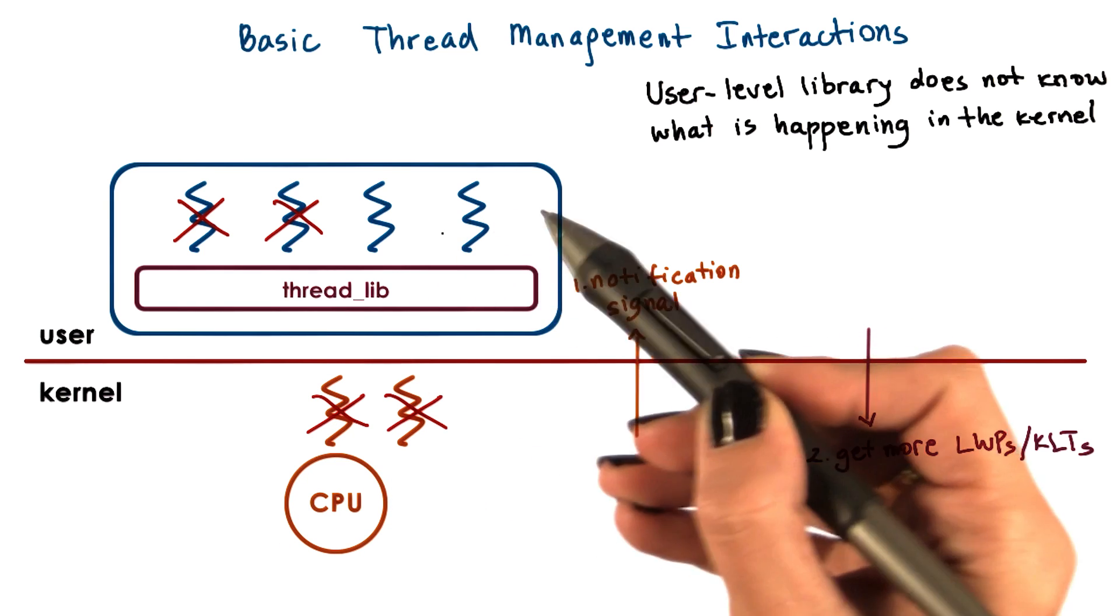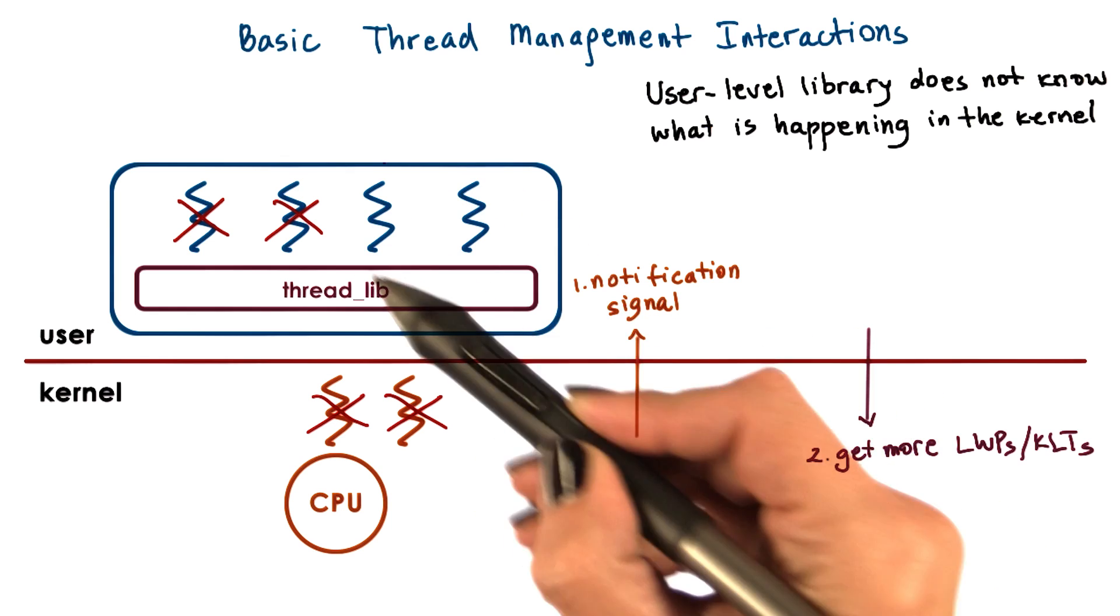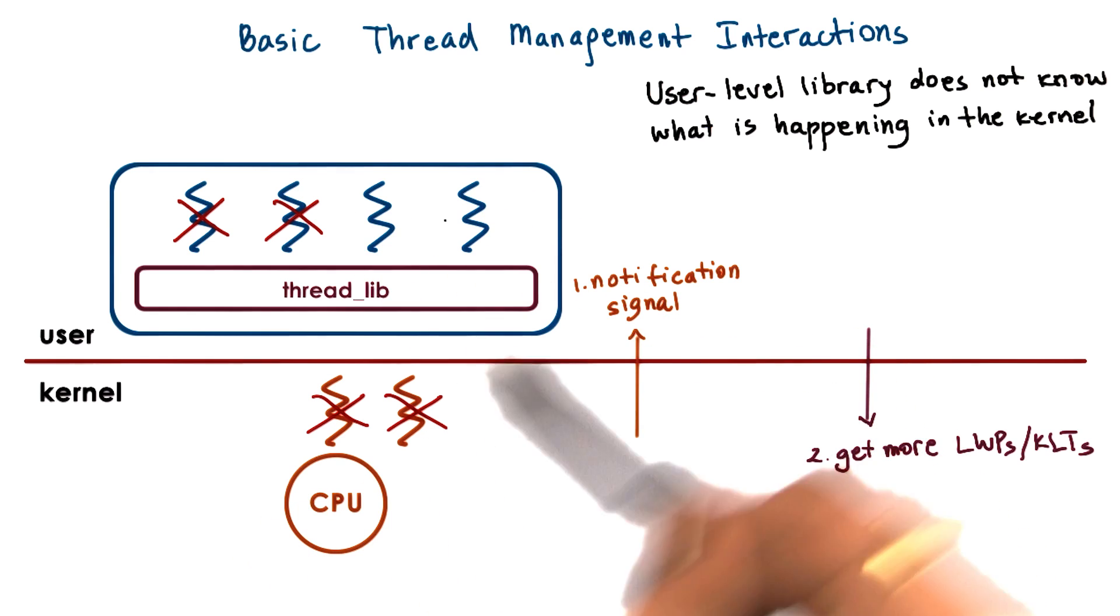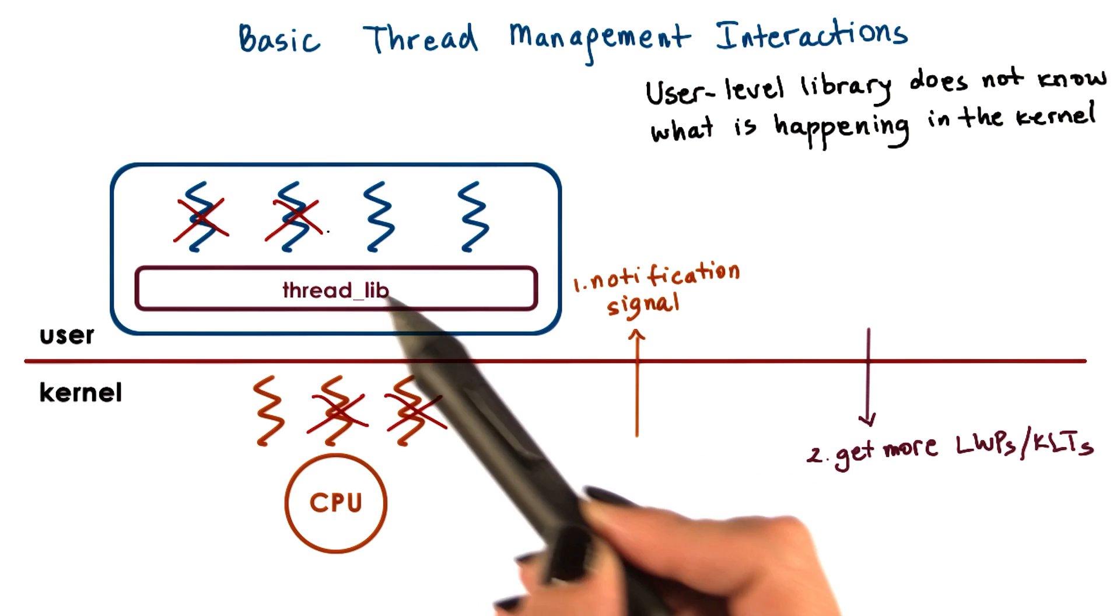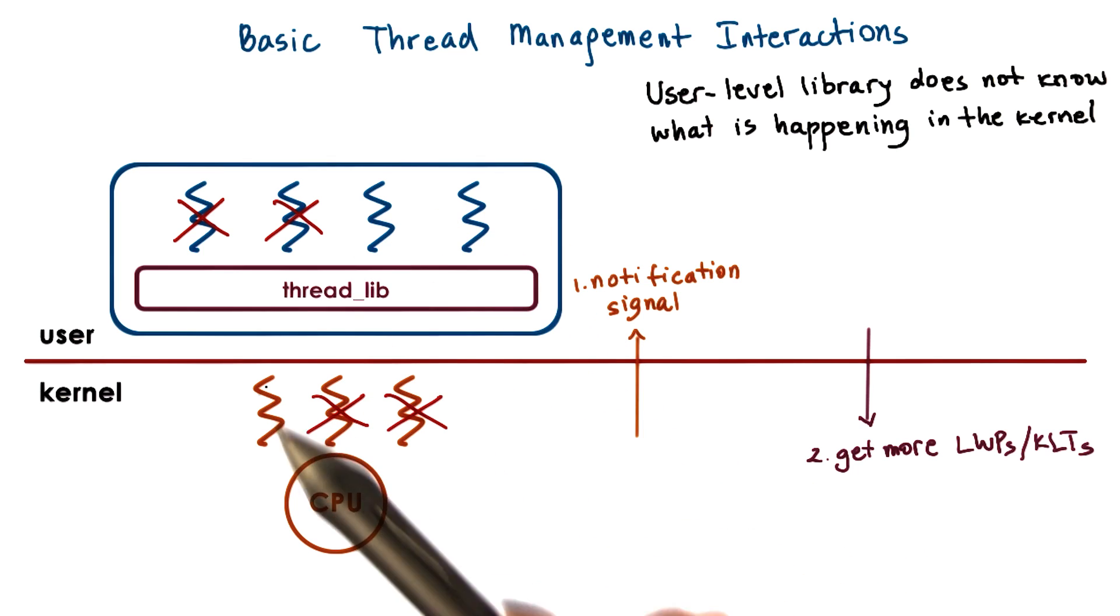Then the user-level library can check its run queue, see that it has multiple runnable user-level threads, and in response request more kernel-level threads via a system call. In response, the kernel allocates an extra kernel-level thread and the library can schedule the remaining user-level threads onto the associated lightweight process.